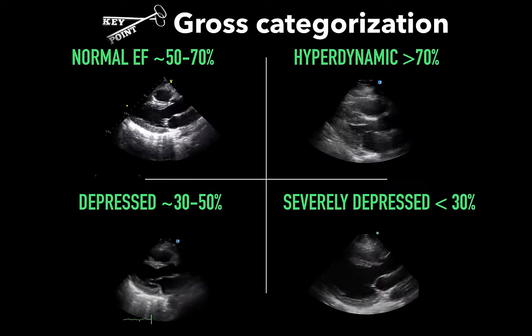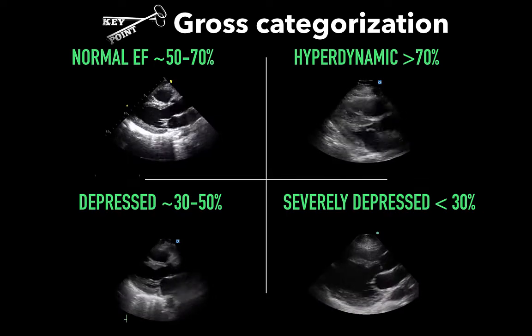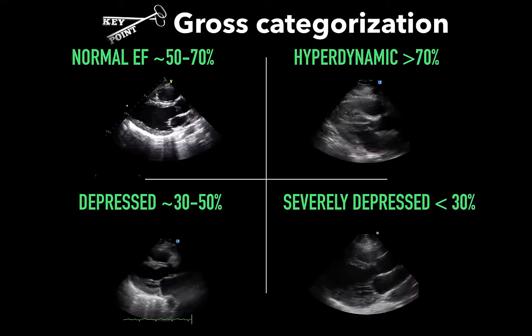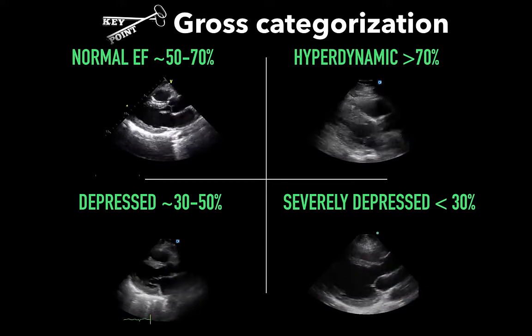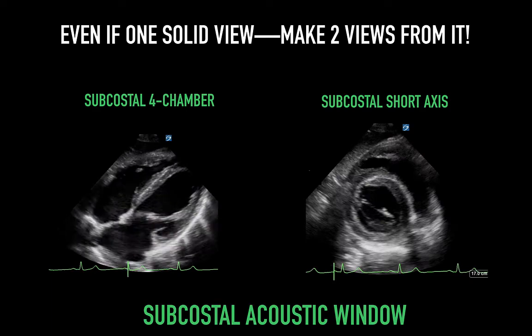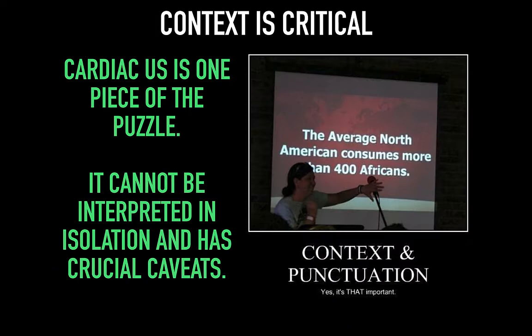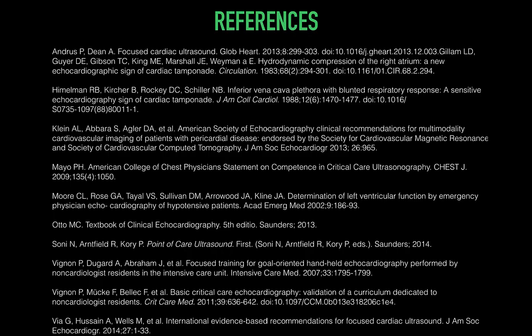In summary: use multiple views, avoid foreshortening, and you'll need lots of repetition for your eyes to be trained to readily categorize and discern the differences between these categories. Even with one solid view, try to get two views to convince yourself that you're correct. Remember that context is critical — cardiac ultrasound is one piece of the puzzle and cannot be interpreted in isolation. As your skills in multiple domains of critical care ultrasound increase, you'll have other tools at your disposal, including lung ultrasound for pulmonary edema and pleural effusions, which may provide added information. Thank you for listening, and see you next time.